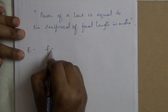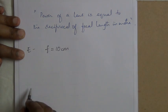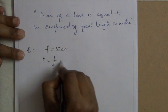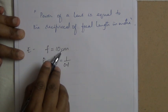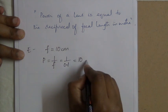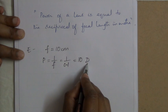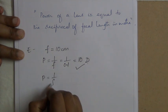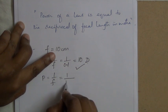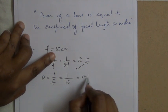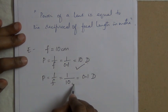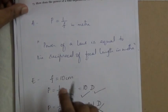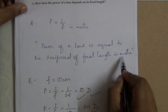For example, if the focal length of a lens is 10 centimeters, then Power = 1/f = 1/0.1 = 10 diopters. The diopter is the unit of power of a lens. If the focal length is kept in centimeters (e.g., 1/10 cm), the answer would be 0.1, which is incorrect. The correct answer uses focal length in meters, giving 10 diopters.